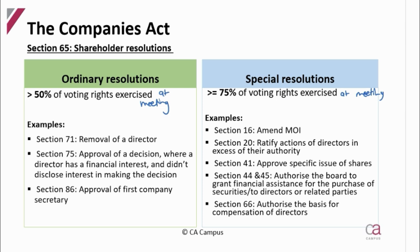Examples of where ordinary resolutions are required include: removing a director, approval for a decision where a director has a financial interest and was involved, and approval of the first company secretary. For special resolutions: amending the memorandum of incorporation, ratifying directors' actions in excess of authority, approving specific issues of shares to a related party or director, and sections 44 and 45 — financial assistance for the purchase of shares or financial assistance to a director or related party.